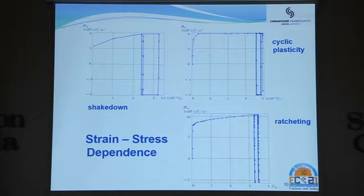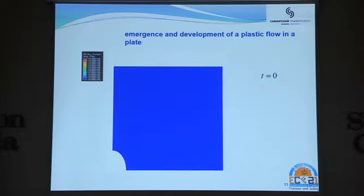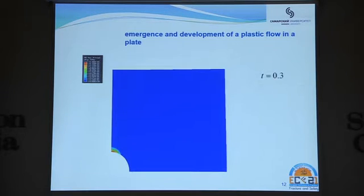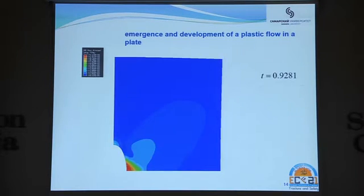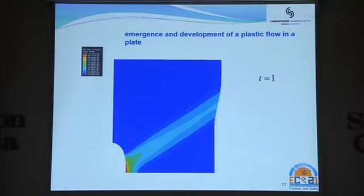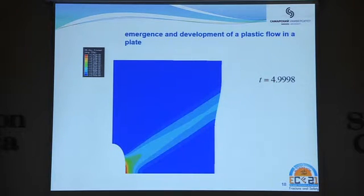These graphs were made for strain stress dependence. And here you can see all three types of behavior which were classified earlier. Now we can see the plastic flow which is obvious in the plate, and then the structure collapses. This is the ratcheting.